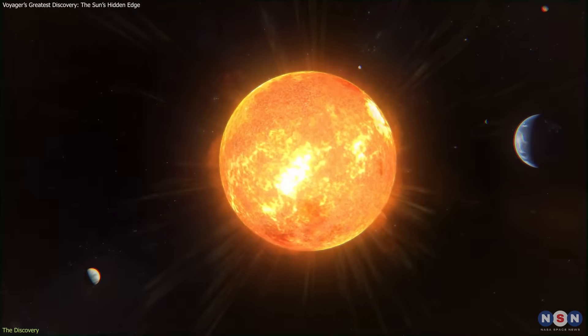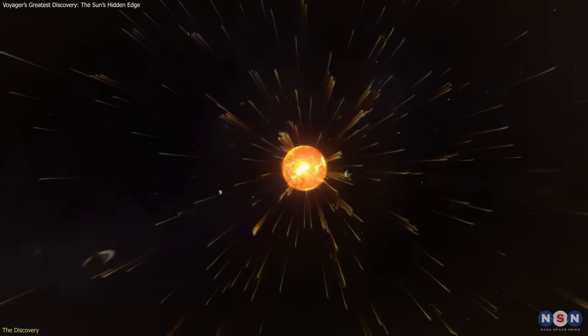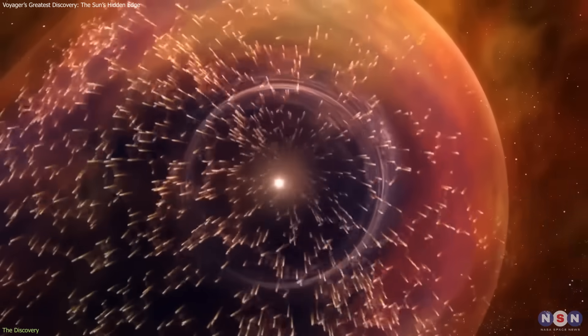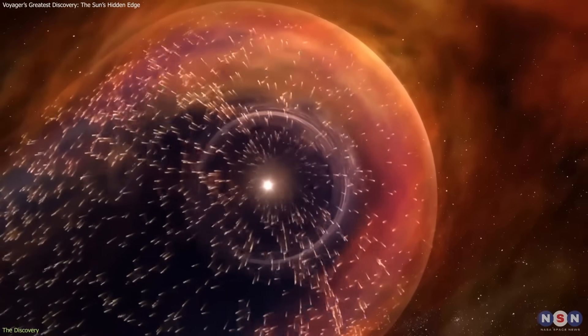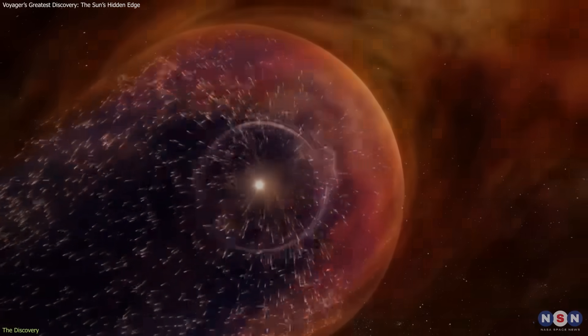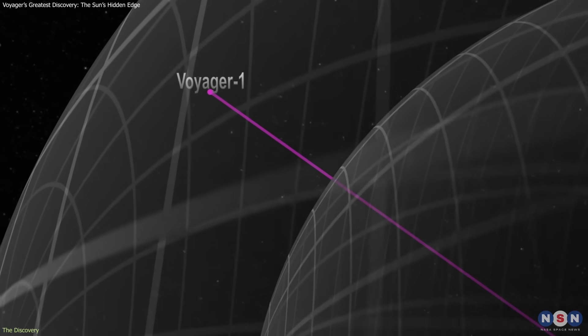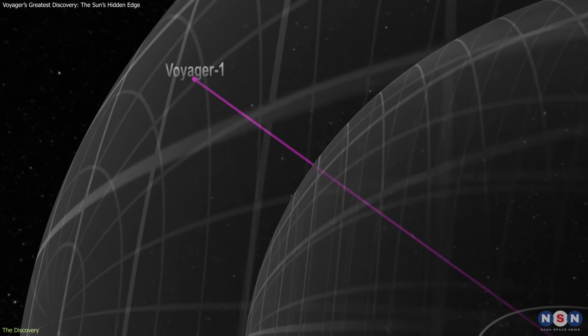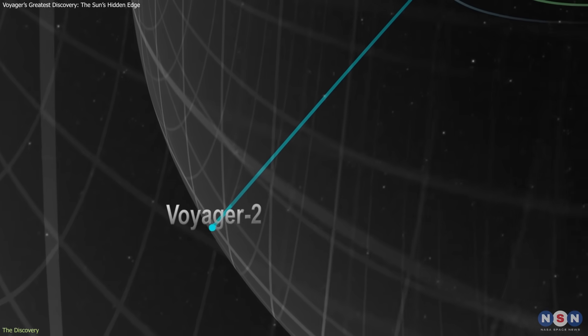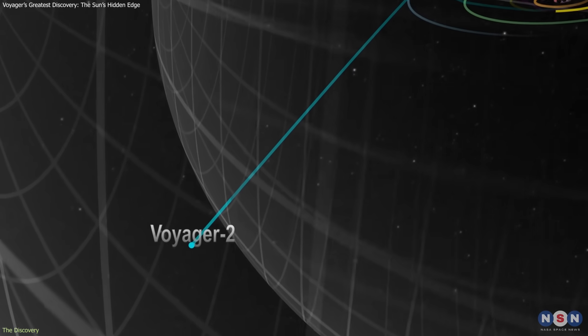Scientists had long theorized that at some extreme distance, this flow would collide with the interstellar medium, the thin gas and dust that fills the galaxy, forming a boundary called the heliopause. In 2012, Voyager 1 became the first probe to cross it. Voyager 2 followed in 2018, confirming the earlier findings.